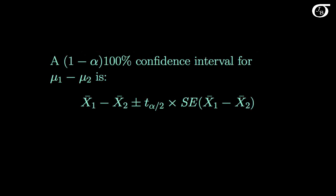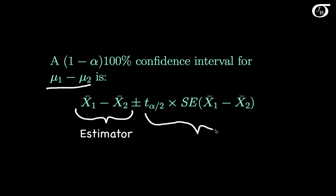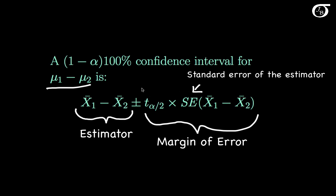Once we have those quantities, our confidence interval for the difference in population means, mu1 minus mu2, is constructed in the usual way. We take our best estimate, which is the difference in sample means — our estimator of mu1 minus mu2 — and we add and subtract a margin of error made up of two components: the standard error of our estimator, and a t value with the appropriate degrees of freedom. The degrees of freedom for the t are based on the degrees of freedom for the variance we are using.